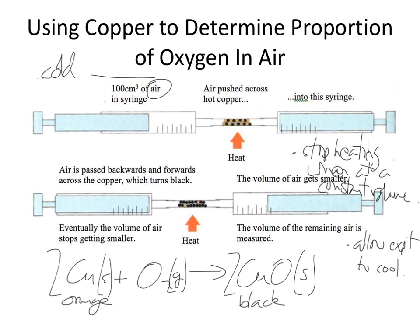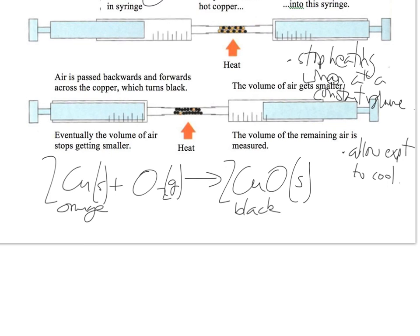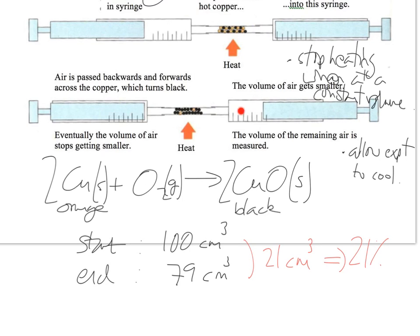What we should find is that if we started with 100 cm³ of cool air, at the end we should be left with 79 cm³ of cool air. So you can see the difference between the two is 21 cm³, which is 21%, and that 21% is the oxygen which is bonded to the copper, which is no longer in the air. That tells you that the amount of oxygen in the air is 21%.